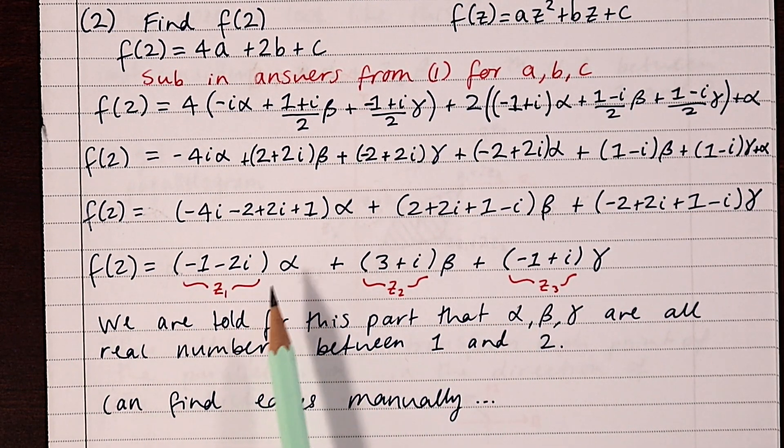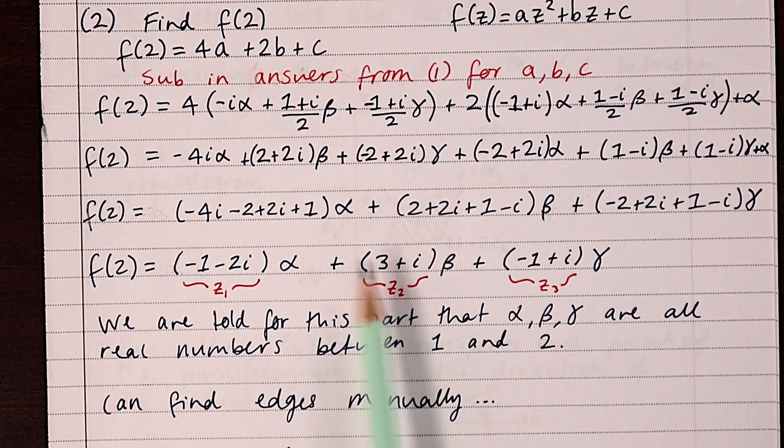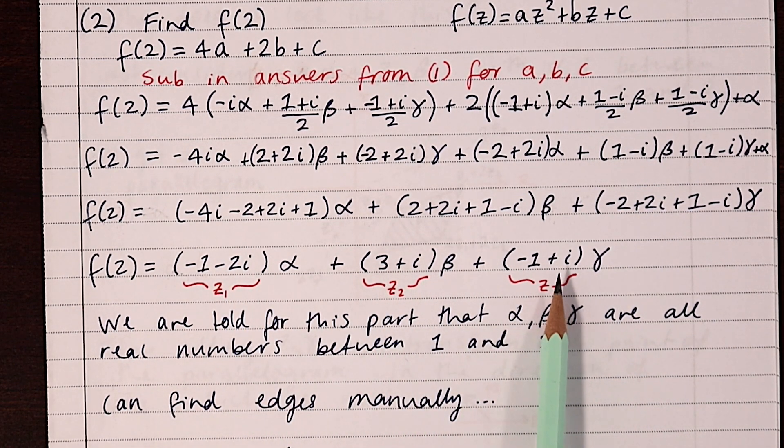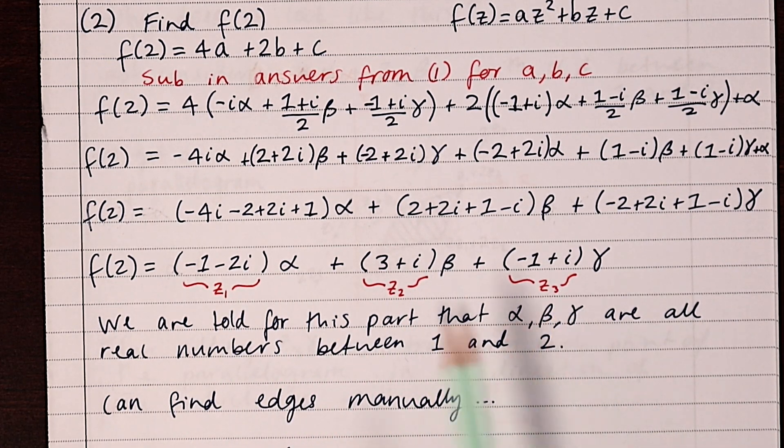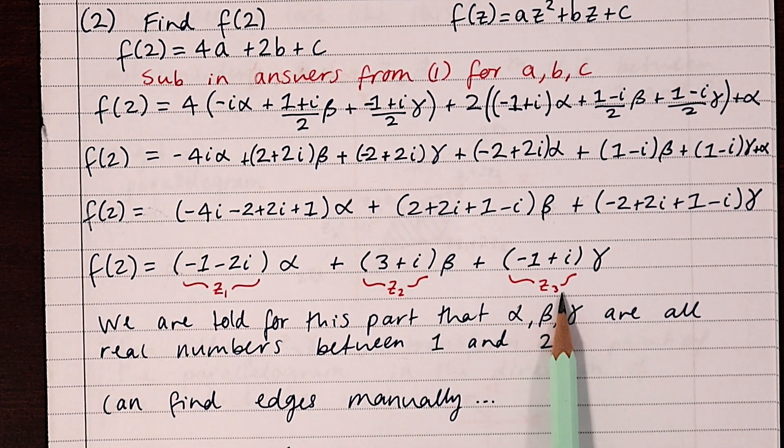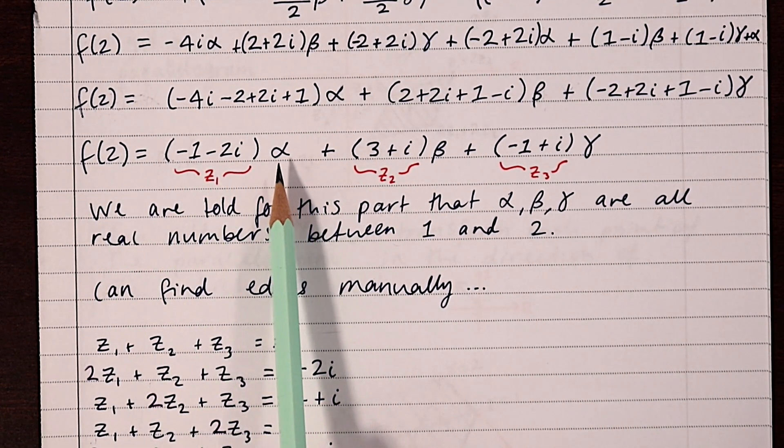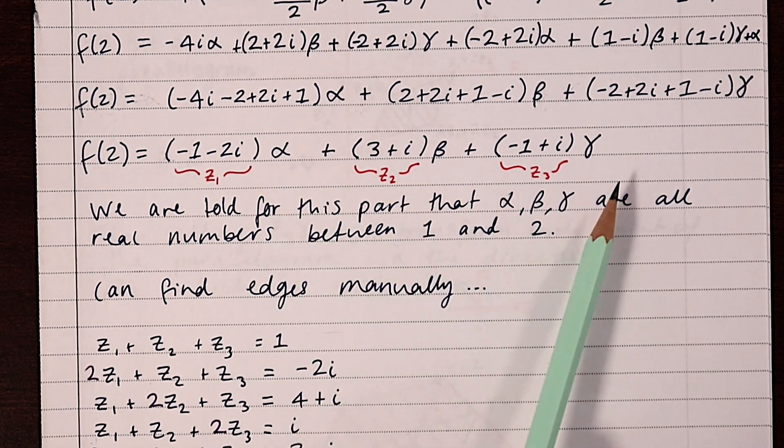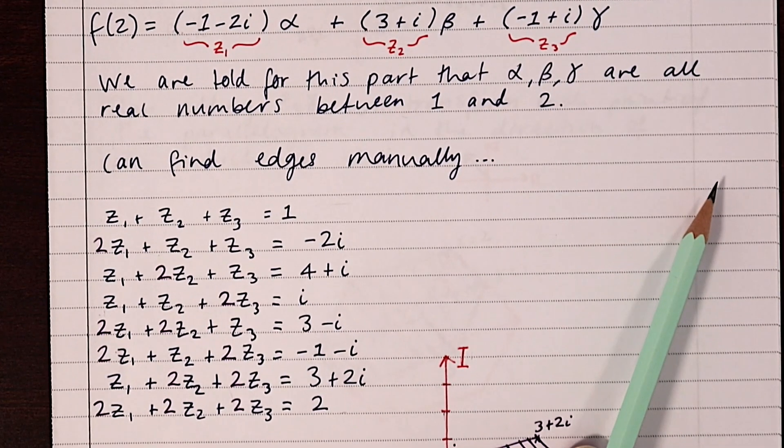And what's useful to notice is that whilst alpha, beta, and gamma are just real numbers between one and two, these coefficients in front of them are three complex numbers. So the function is the addition of three complex numbers, and we can even call them z1, z2, and z3. We want to plot the range of this function, and we can actually just find the vertices directly by setting alpha, beta, and gamma to either one or two. Here's how I've done it here.